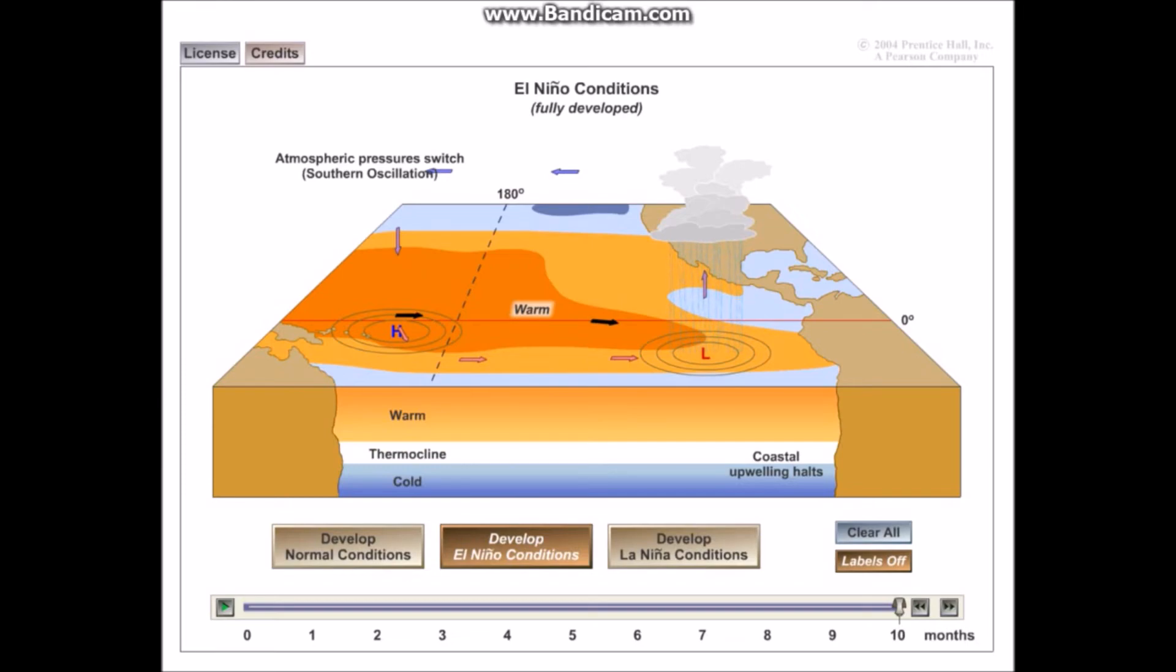So although El Niño is just a change of atmospheric and also water conditions in the Pacific Ocean, it has far-reaching effects all across the planet and has been blamed for potentially causing hurricanes or droughts in other parts of the world too.